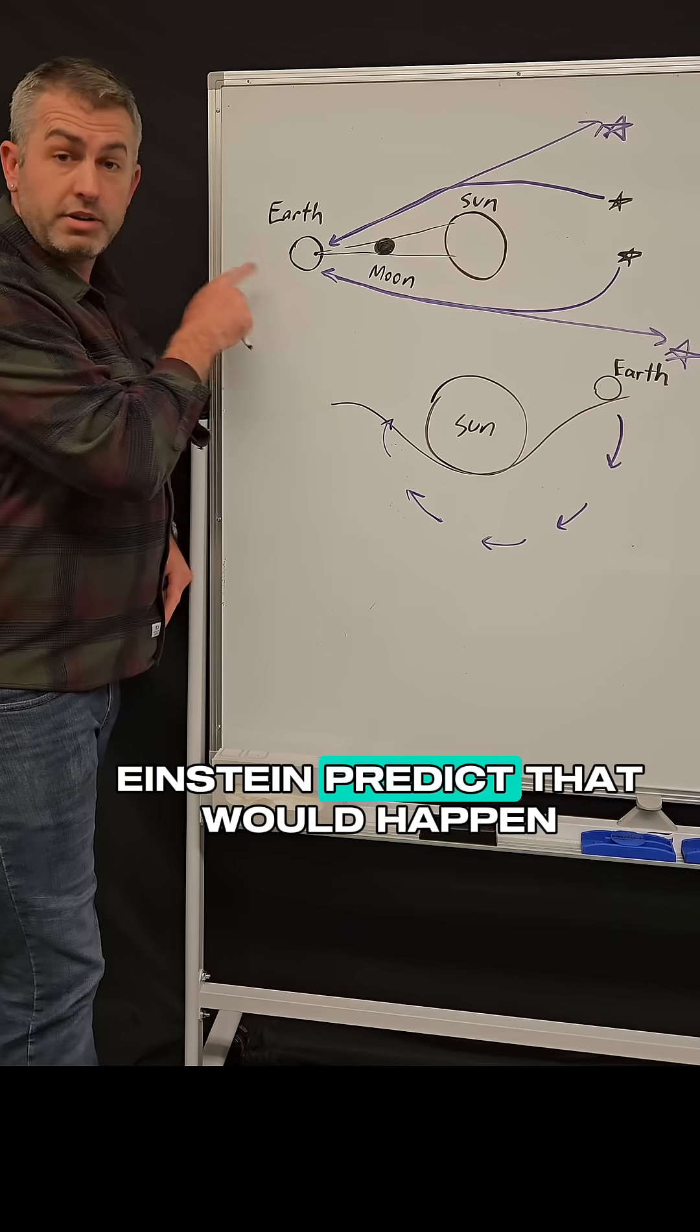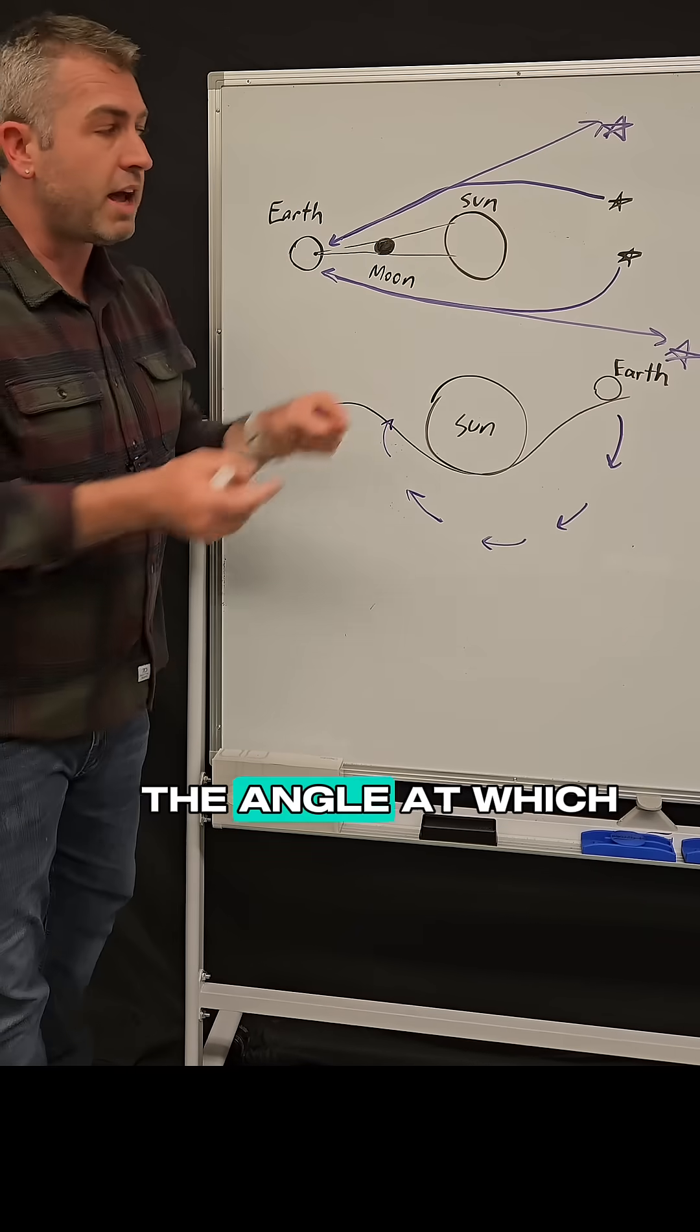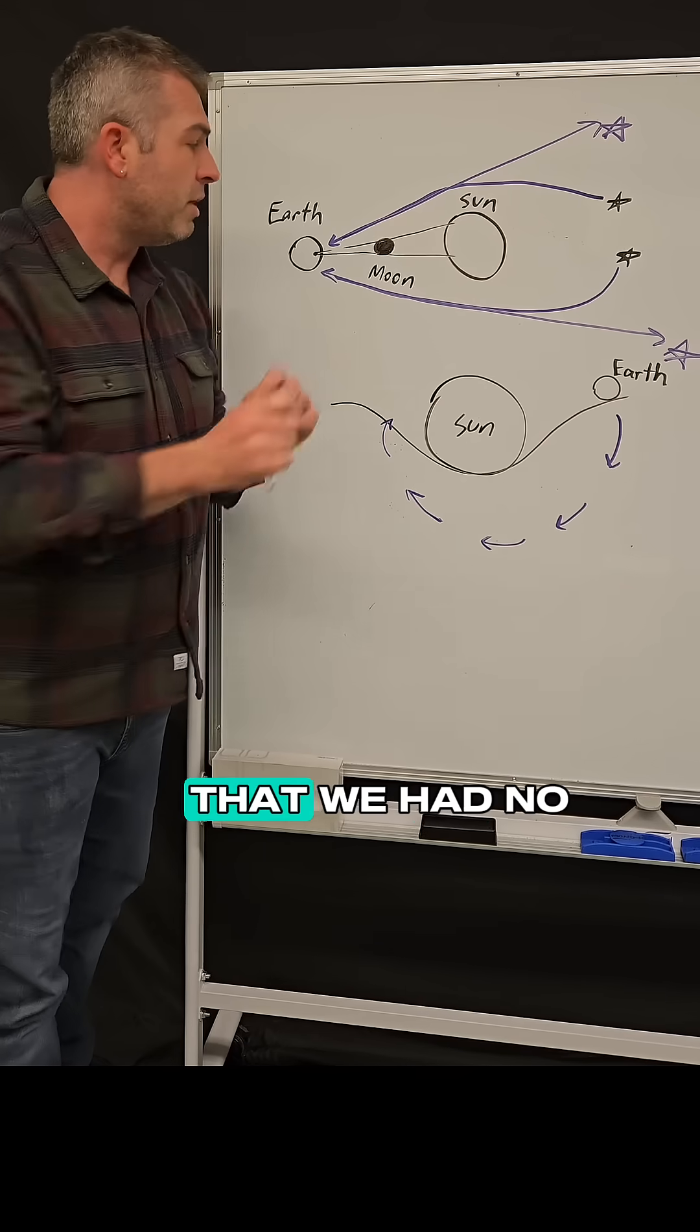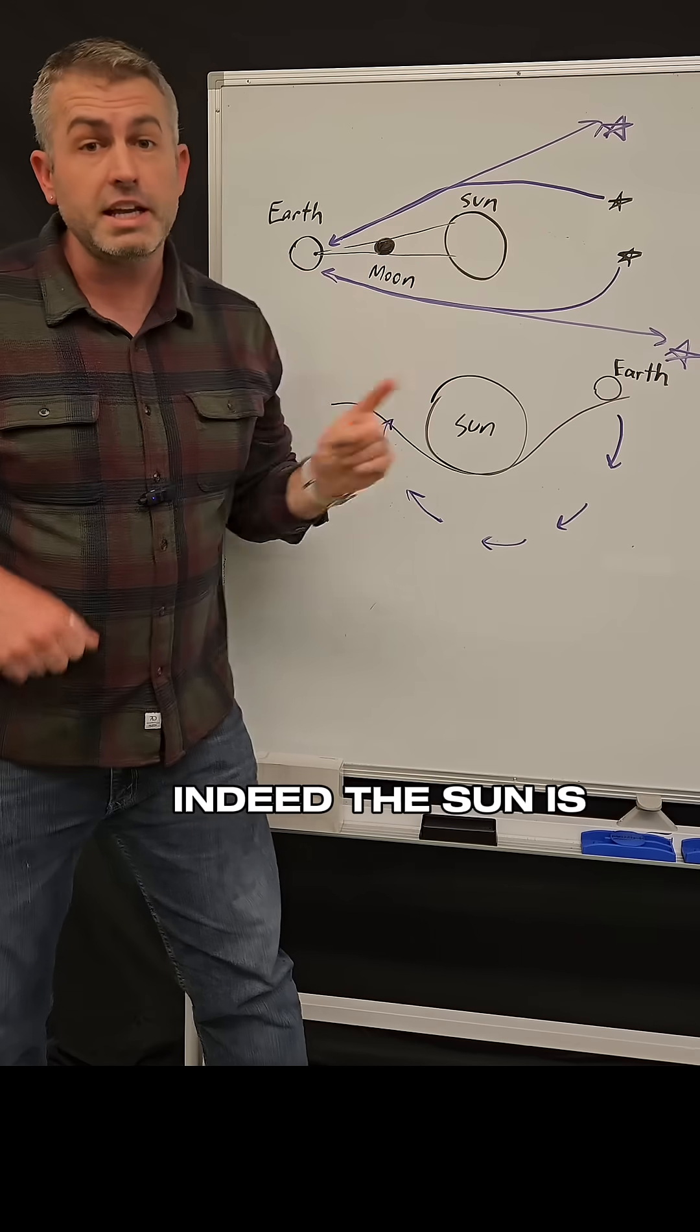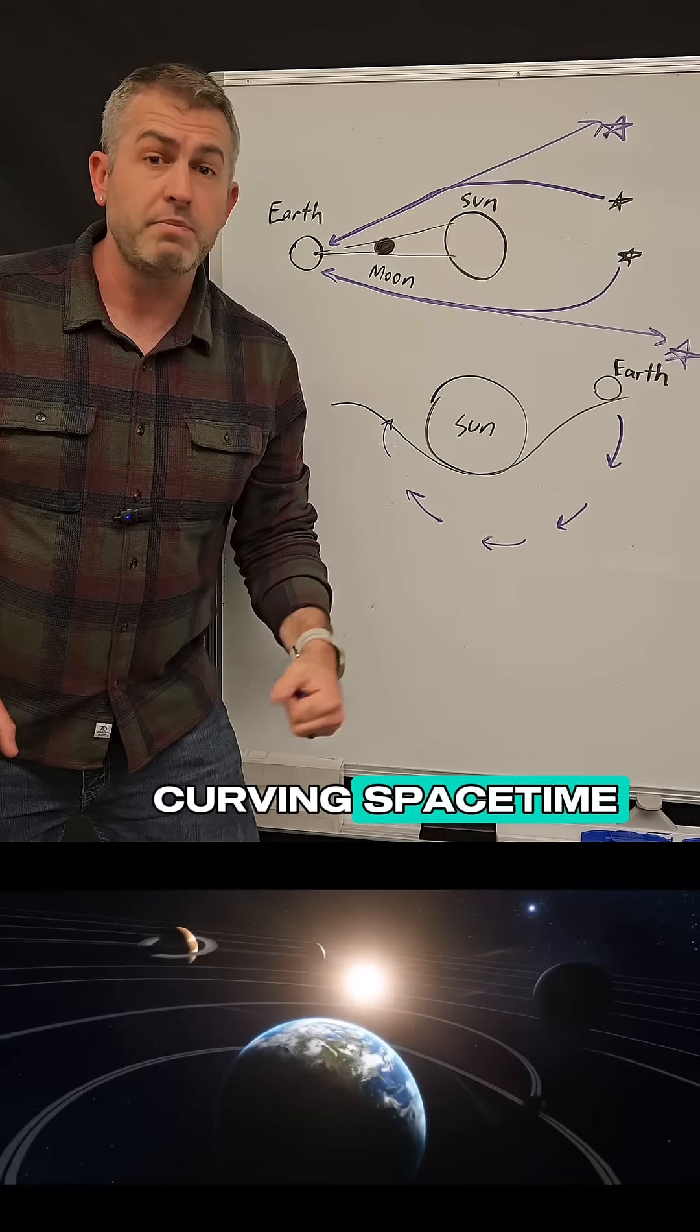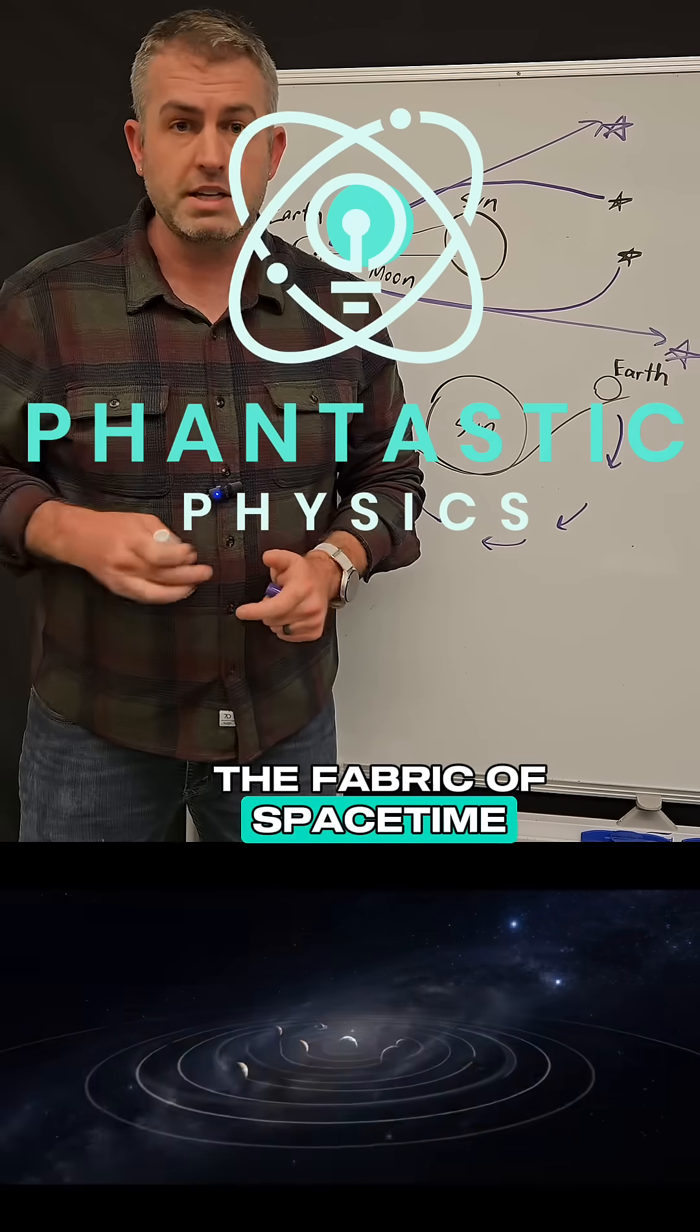And not only did Einstein predict that would happen, he was able to predict exactly the angle at which this starlight would bend. His prediction was so spot-on that we had no choice but to acknowledge that yes indeed the Sun is bending starlight around itself and therefore it is curving space-time. And so gravity is not a force, it's a curvature in the fabric of space-time.